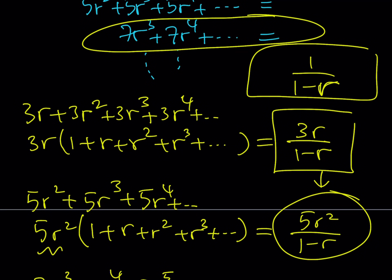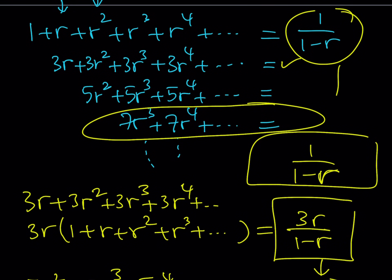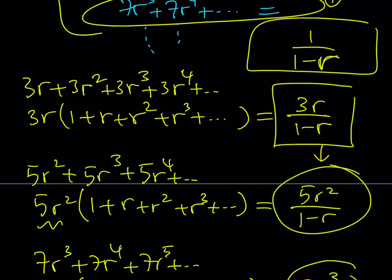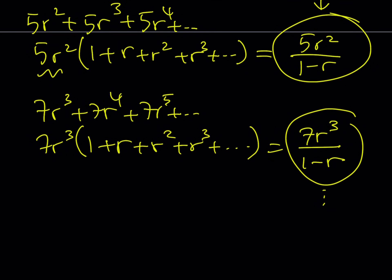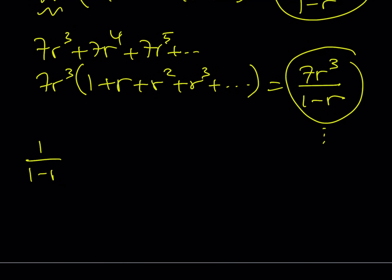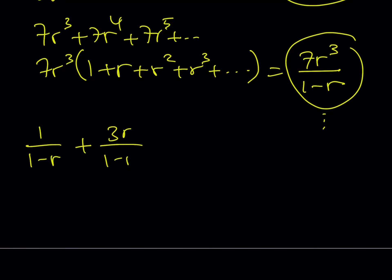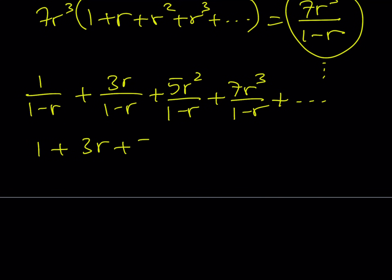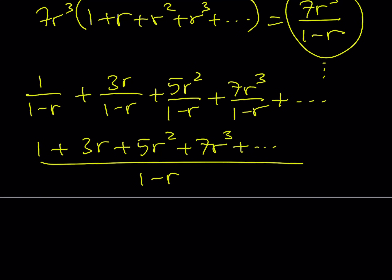Next we're going to add all these together column by column, which is what happens on the right hand side. So adding them up: 1 over 1 minus r, plus 3r over 1 minus r, plus 5r squared over 1 minus r, plus 7r cubed over 1 minus r, and so on. They all have a common denominator, so I can just add the numerators. The numerators are all odd coefficients — so how do I handle that sum?